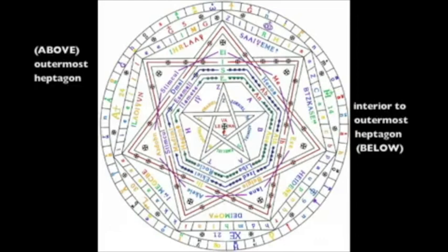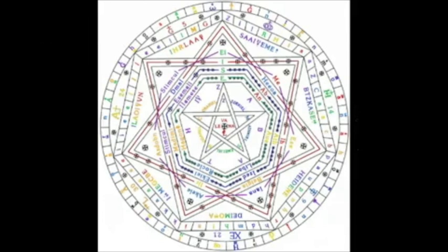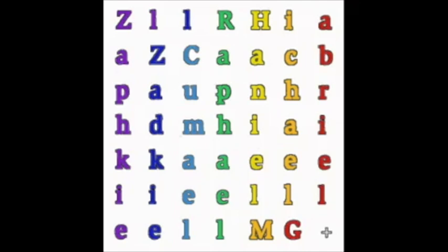Next, in the following series of diagrams we will be looking at the letters in the outermost heptagon as above, and the letters from the interior of the outermost heptagon below. In the first array we see the seven archangels whose names govern over the seven days of the week, color-coded according to the planets.